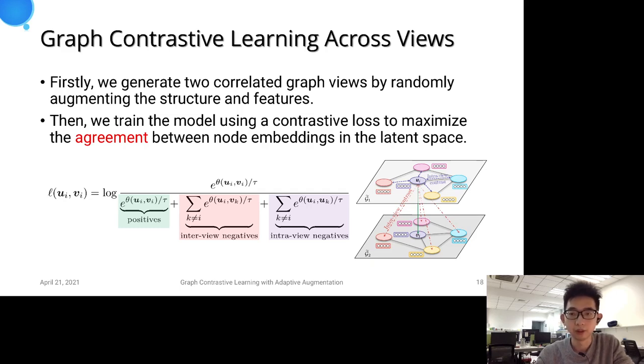we generate two correlated graph views by randomly augmenting the graph structure and the node attributes. Then, we train the model using a contrastive loss to maximize the agreement between node embeddings in the latent space.